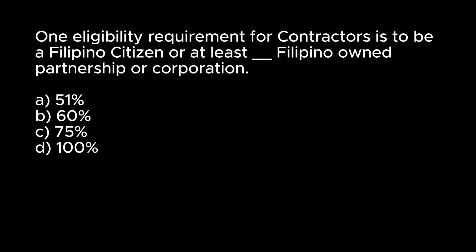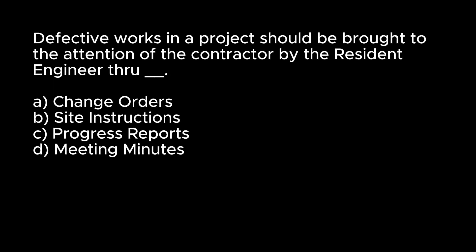One eligibility requirement for contractors is to be a Filipino citizen or at least blank Filipino-owned partnership or corporation. A. 51%. B. 60%. C. 75%. D. 100%. Answer: B. 60%. Defective works in a project should be brought to the attention of the contractor by the resident engineer through: A. Change orders. B. Site instructions. C. Progress reports. D. Meeting minutes. Answer: B. Site instructions.